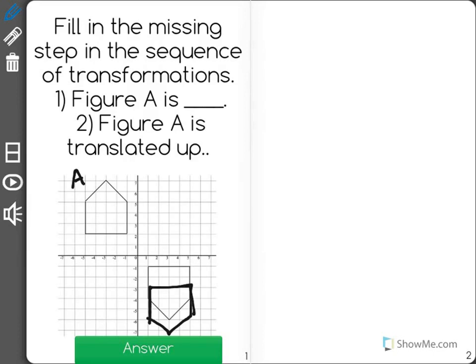So it would still be looking like this because we know that the second step is that it was translated up. So the question is how did our figure get from A here to wrap and flip around and now be down here?